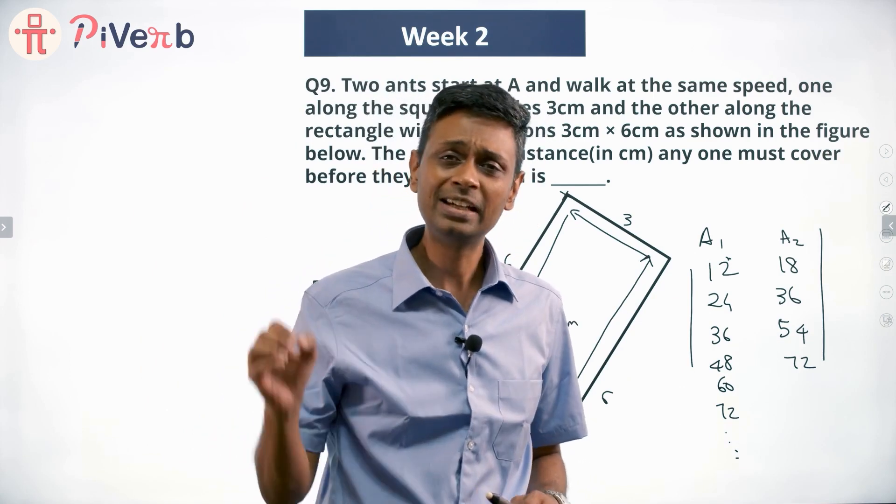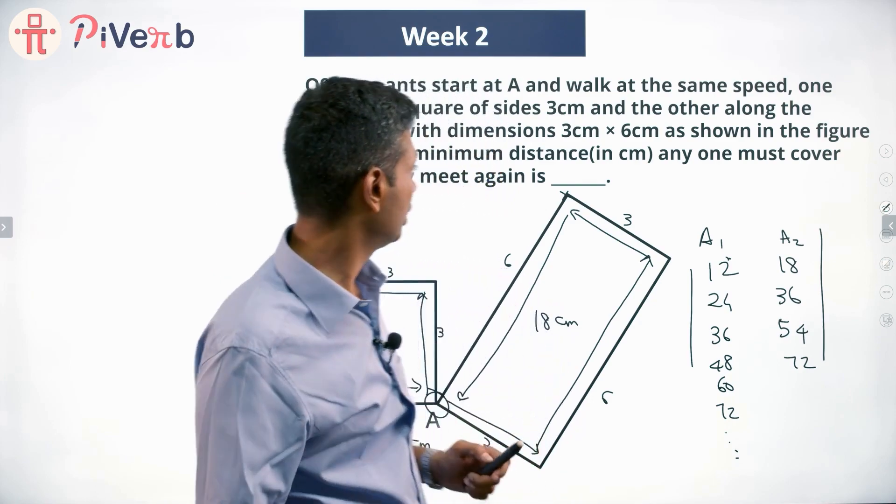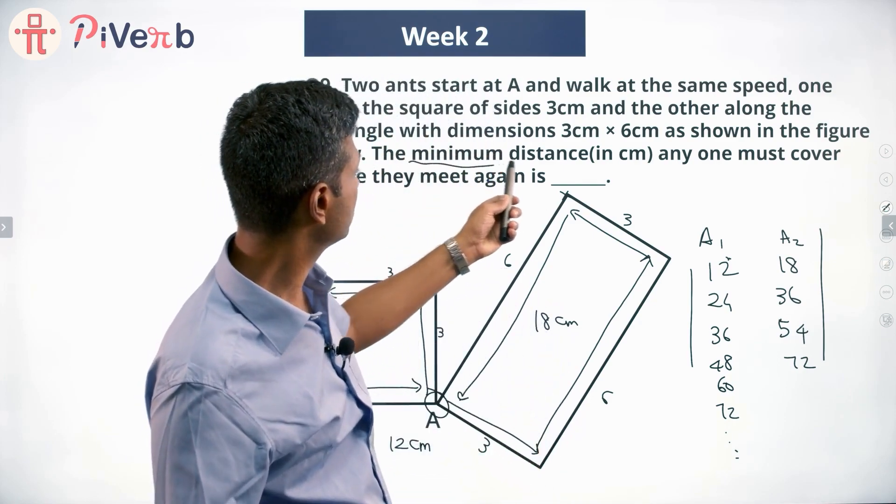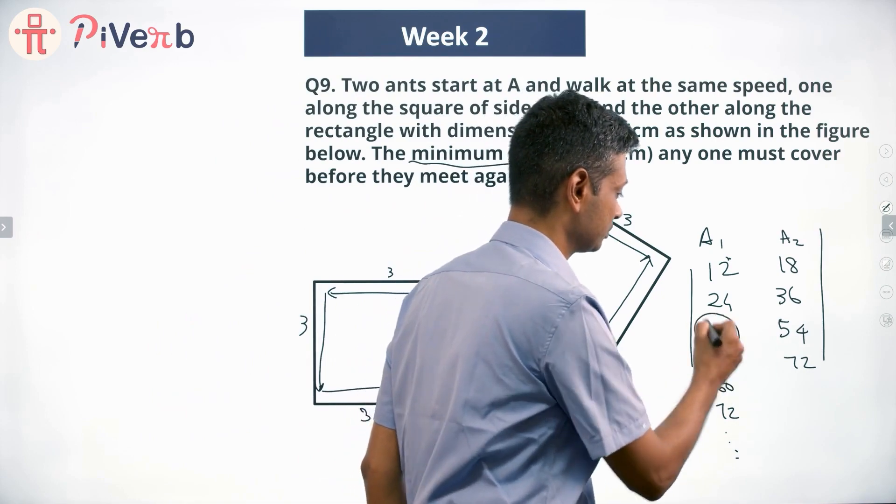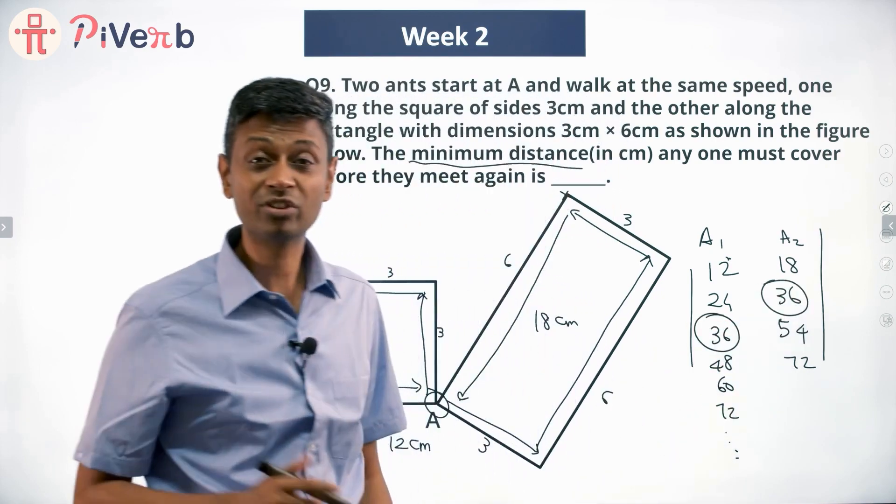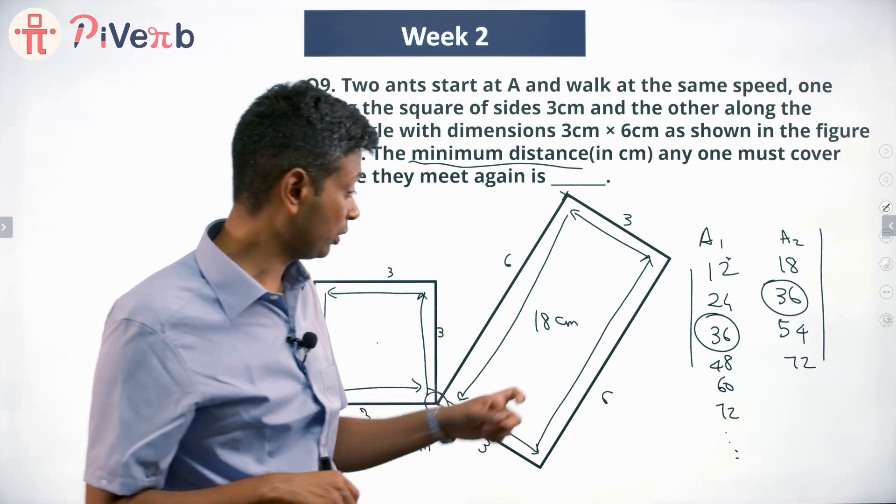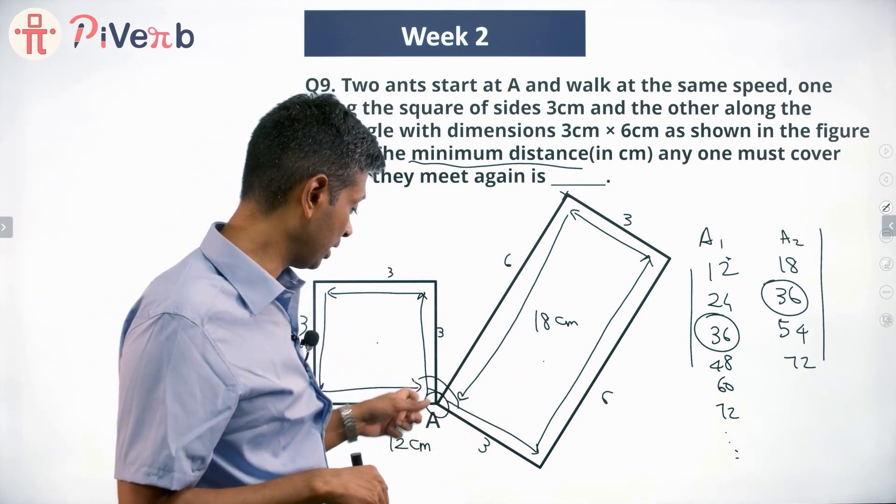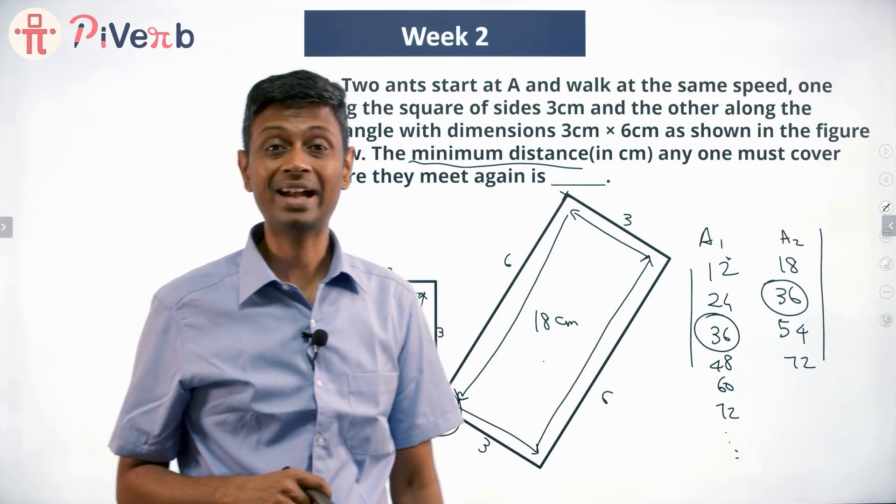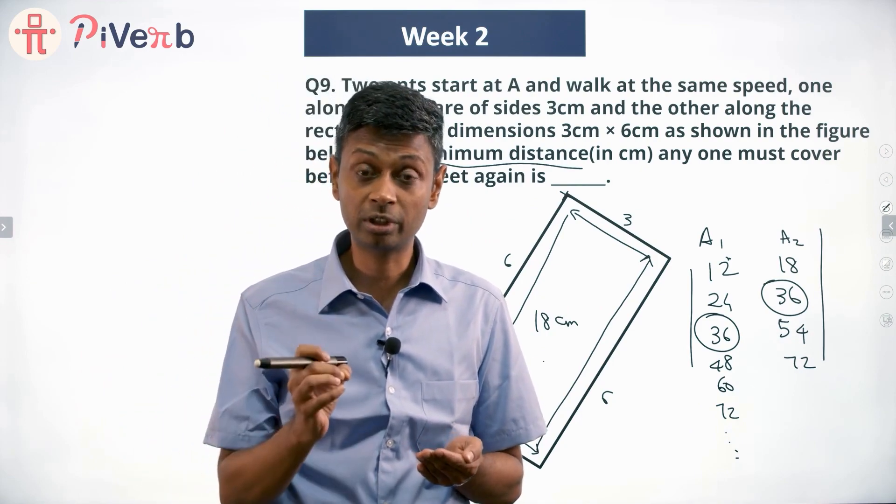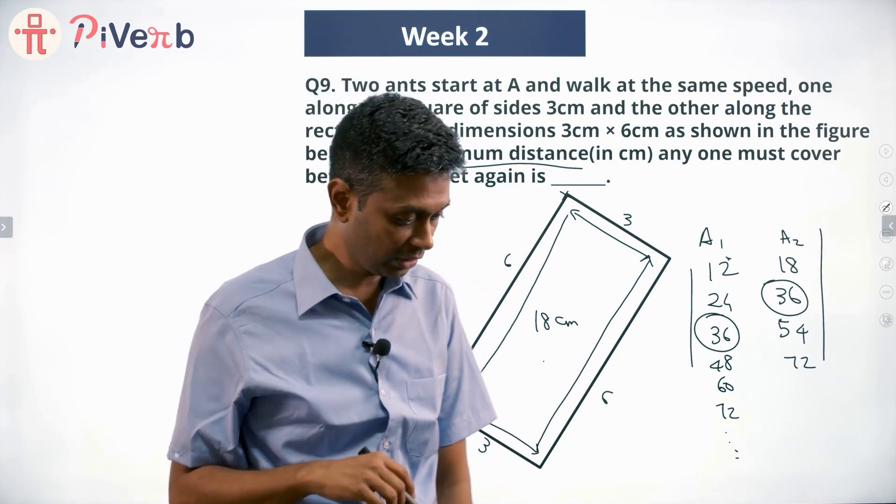Or we are looking for the least common multiple of 12 and 18 because you want to find the minimum distance they have traveled at 36. Or after 36 centimeters, this fellow would have done 3 rounds, this fellow would have done 2 rounds, and both will happen to be at A. So if both have traveled 36 centimeters, they will meet at point A. Lovely.